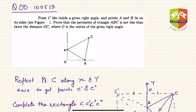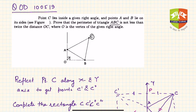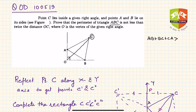Welcome friends. In this question of the day, it is given that point C lies inside a right angle, and points A and B lie on its sides. In this figure, C is within the right angle, O is the right angle vertex, and A and B are on the sides. You have to prove that the perimeter of triangle ABC is not less than twice the distance OC. So you need to prove that AB plus BC plus CA is greater than 2·OC.